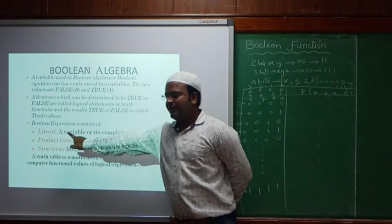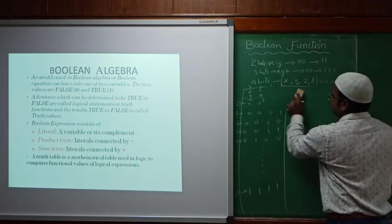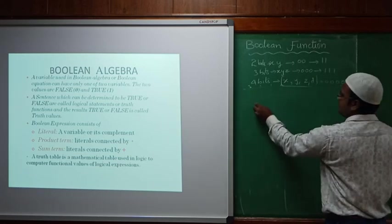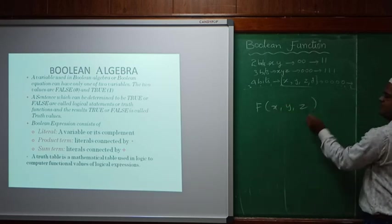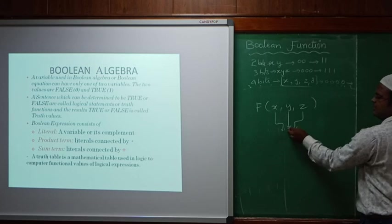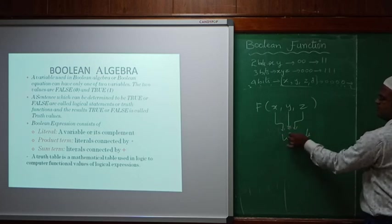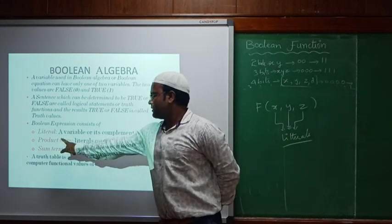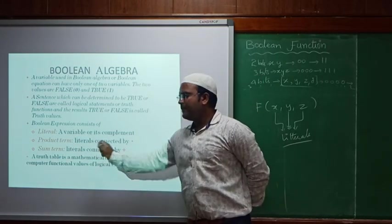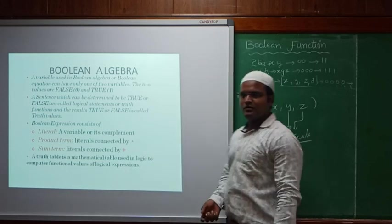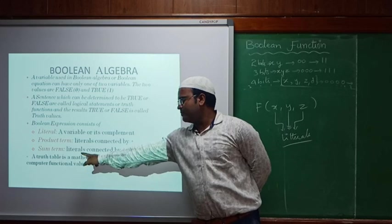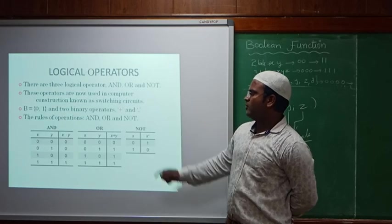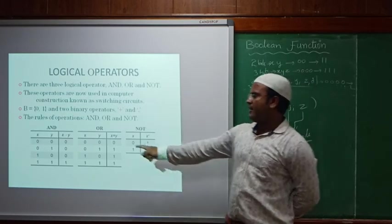In Boolean algebra, zero means false and one means true. Any statement based on true and false can be written using Boolean functions. In this we will see three things. First is called literals — if I have variables like x, y, and z in a function f(x, y, z), then x, y, and z are called literals. Literals are the variables or inputs we are working with. Next, we can use product terms or sum terms — product means multiplication and sum terms means addition, using plus.